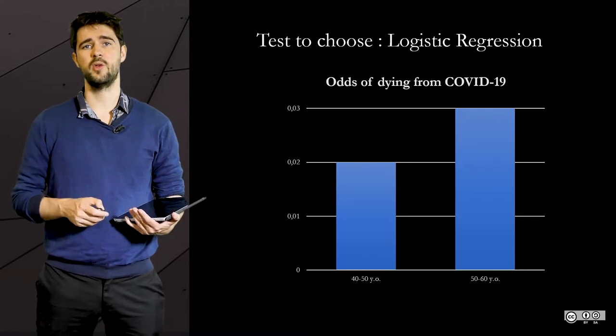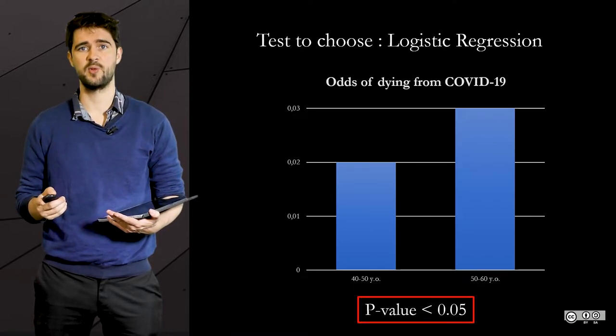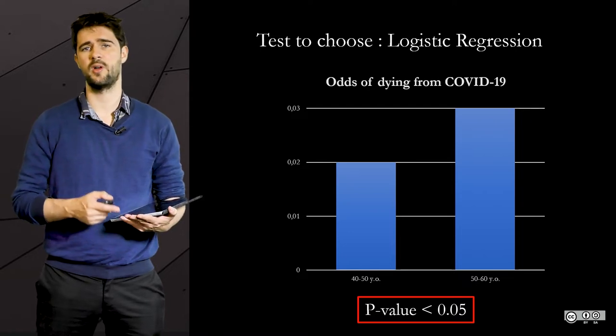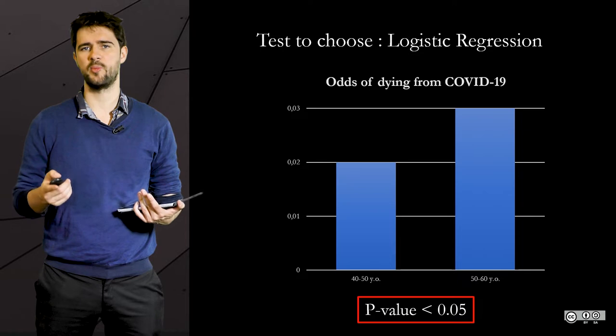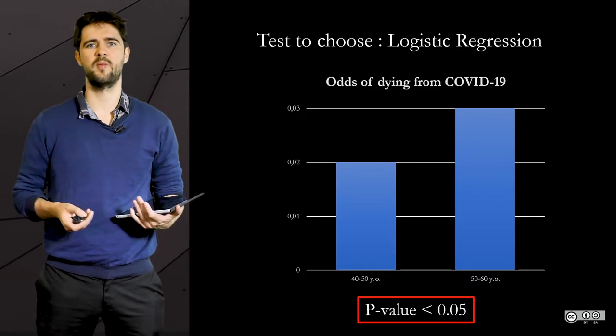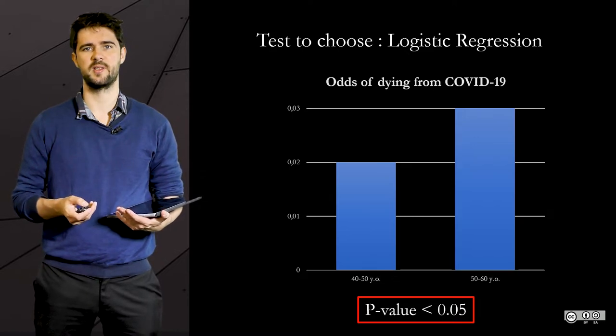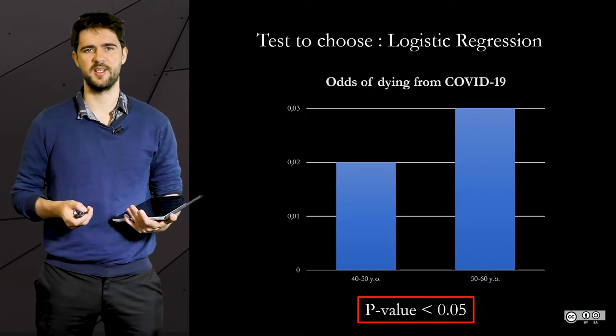And again, you look at the p-value to see if the difference is statistically significant between people in their 30s, 40s, or in their 50s. If the p-value of the test is below 0.05, then it means the odds could be higher for people in their 50s, for instance. You would need other metrics like odds ratios, but that's pretty much the idea.